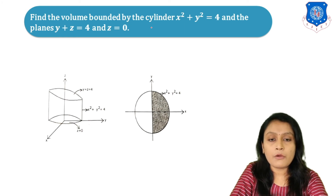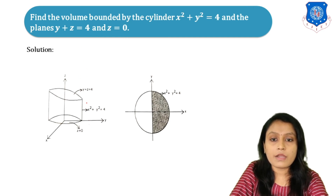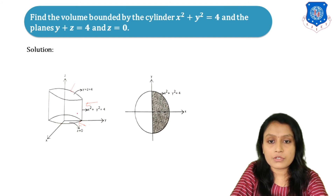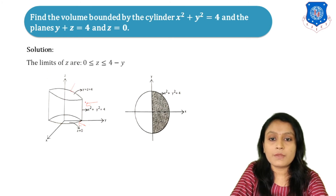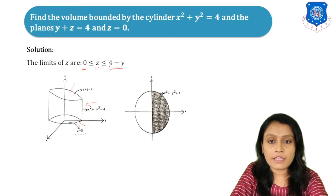Find the volume bounded by the cylinder x squared plus y squared equals 4, and the planes y plus z equals 4 and z equals 0. From the plane y plus z equals 4, making z the subject gives z equals 4 minus y. So the limits of z are from 0 to 4 minus y. The cylinder x squared plus y squared equals 4 gives a circle of radius 2.